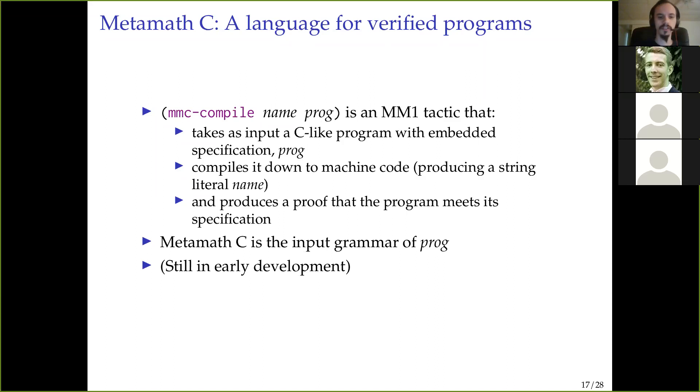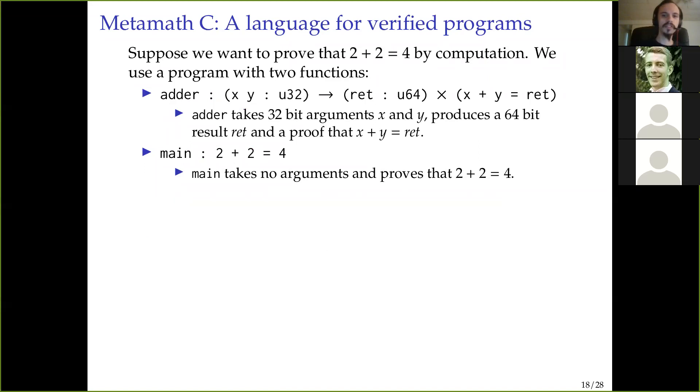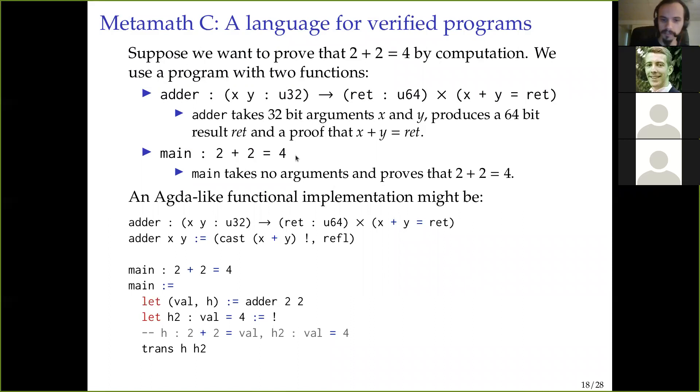Okay, so as an example here, I'm going to prove that 2 plus 2 equals 4 using computation on, you know, my actual laptop. In order to do that, we're going to use two functions. This is sort of a Rube Goldbergian way to do it, but we'll just say we have a function called adder, and this is going to add things. So this takes in two variables x and y, they're 32-bit, and produces a 64-bit result and a proof that x plus y equals ret.